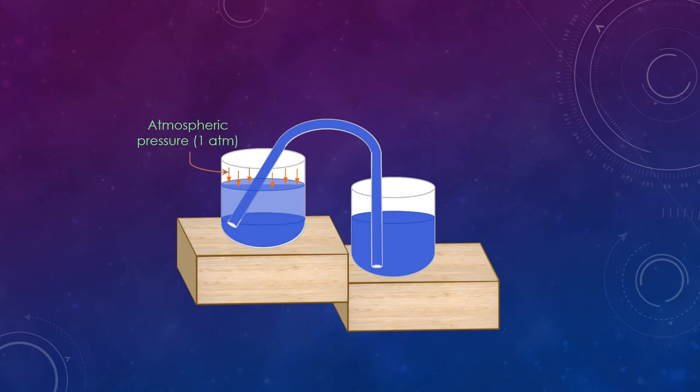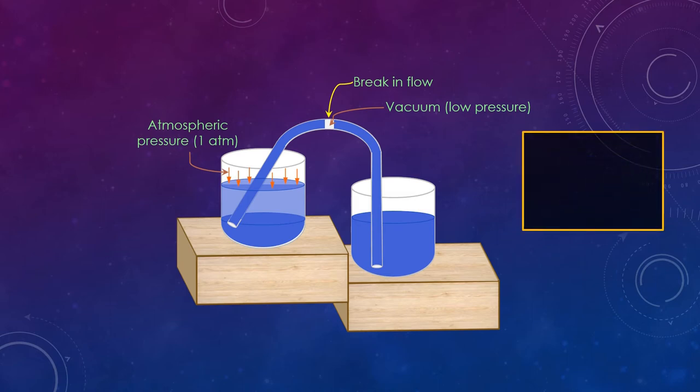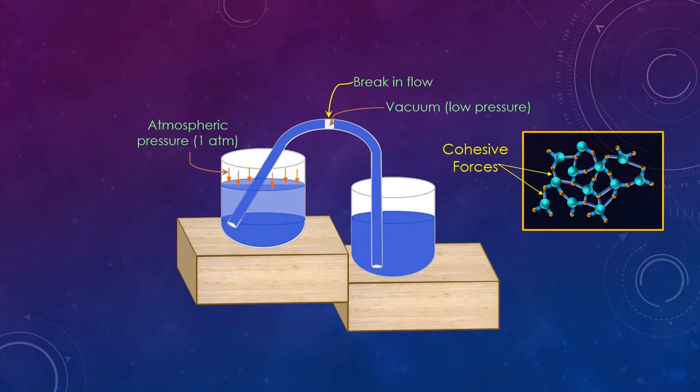Now one can say that water flow can break at the top of the tube, so why doesn't it happen? That is because if water flow breaks, then again there will be a vacuum or low pressure state there, and atmospheric pressure on the left end of the tube will push the water inside. So one can say that atmospheric pressure and gravity both are necessary for siphoning to work. But it has been seen that siphoning also works in vacuums if the fluid has a very strong cohesive bond between them, such as mercury.